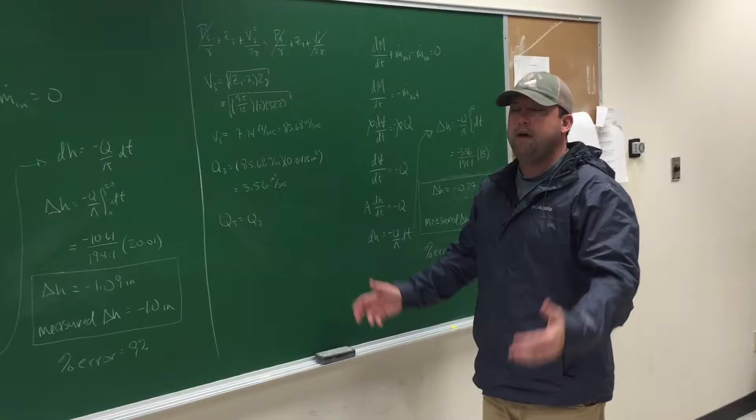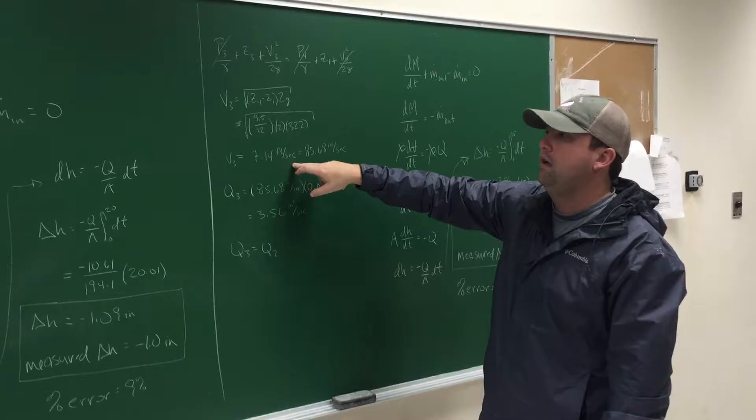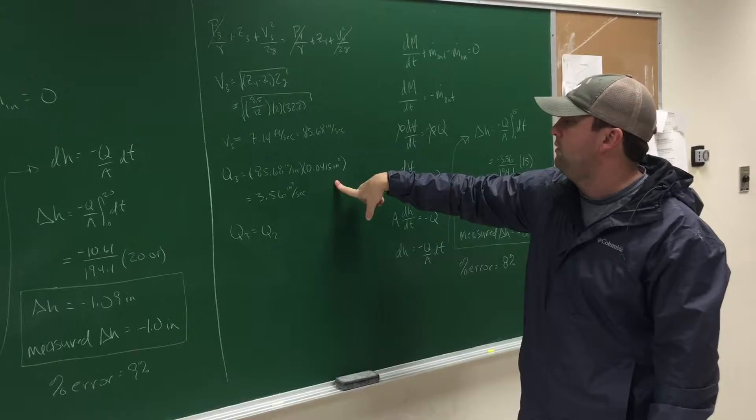For the second part of the experiment, we took a nozzle that we put on the end of the tube that brought the diameter from roughly half inch to about a quarter of an inch. And we measured the change. We got a higher water spout because of faster velocity.